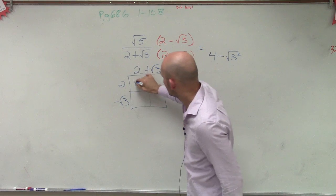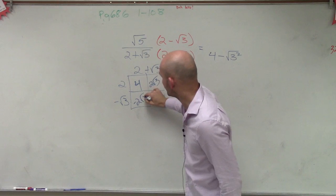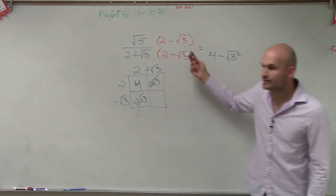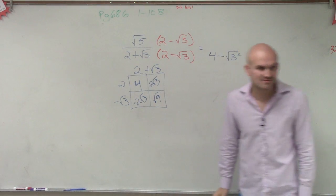you get 4, 2 times square root of 3, negative 2 times square root of 3. And then what's negative square root of 3 times the square root of 3? You guys can say it's just negative 9. I mean, if you want, negative square root of 9. That's fine.